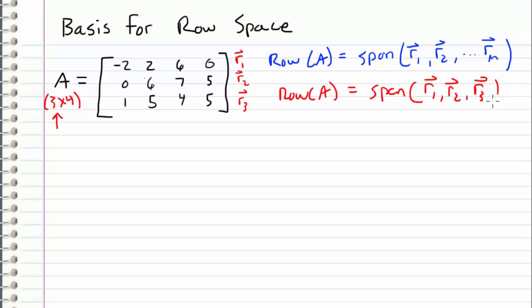But now we want to find a basis for the row space, meaning we want to figure out which one of these vectors, if any, are linearly dependent with the set, and we want to remove them because a basis is always linearly independent.